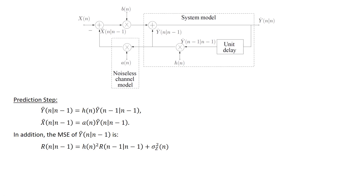Let's look at the first prediction step. The one-step prediction of Y is simply obtained by taking the previous estimate of Y at time n-1 and multiplying it by the coefficient H. We cannot predict what the value of the noise will be — we can only predict what the model allows us to. Similarly, the one-step prediction of X is obtained by taking the one-step prediction of Y and multiplying by the coefficient A, mirroring the channel model but using estimates instead of true values, and omitting the observation noise which we cannot predict.